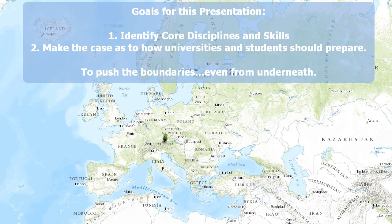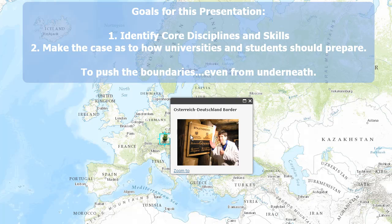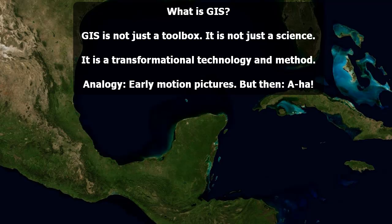My goals for this presentation are as follows. First, let's identify some core disciplines and skills. Number two, let's make the case as to how universities and students should prepare. We want to push the boundaries, even from underneath — here I am underneath the Germany and Austria border. What is GIS, or geographic information systems? It's not just a box of tools, not just a science — geographic information science. It is a transformational technology and method.